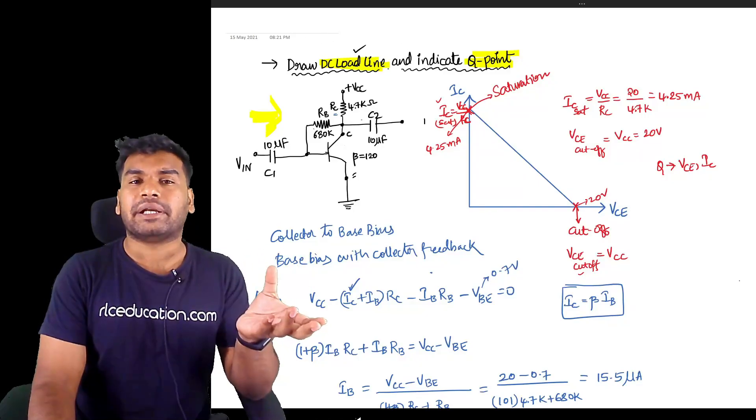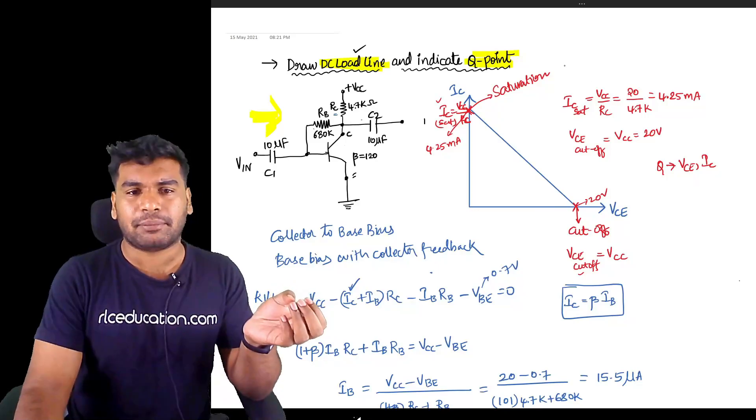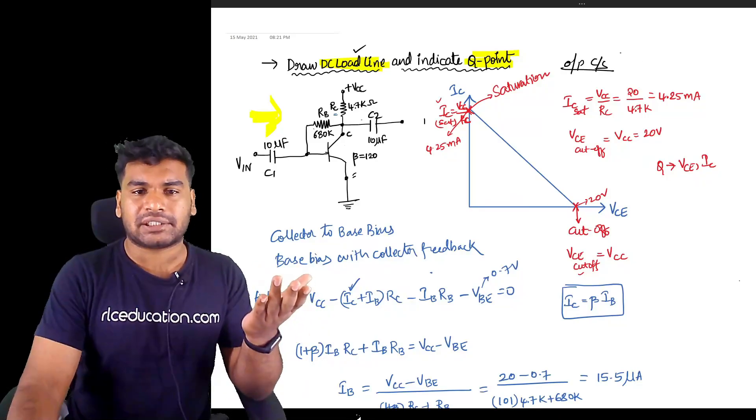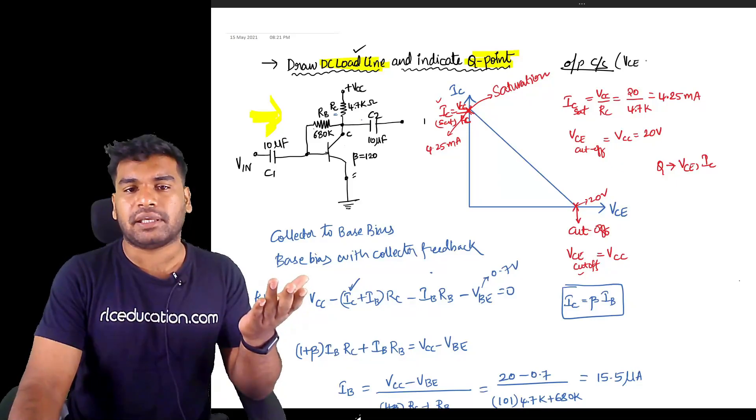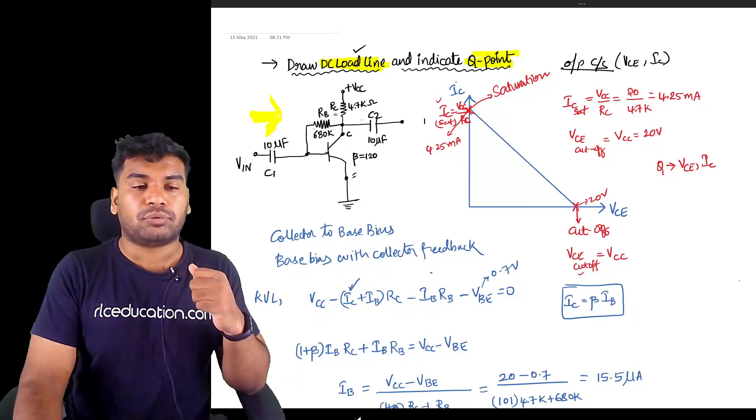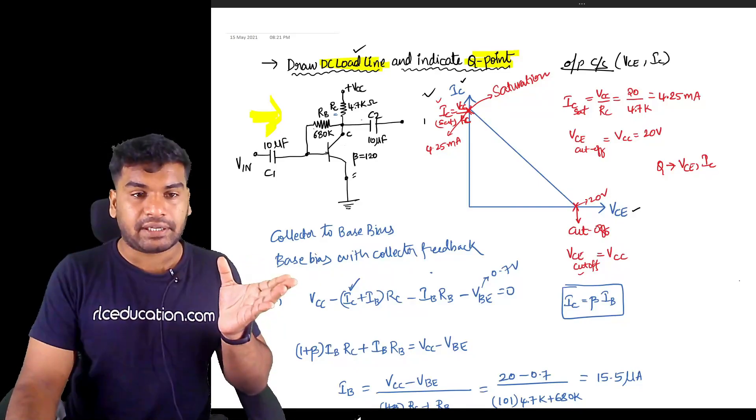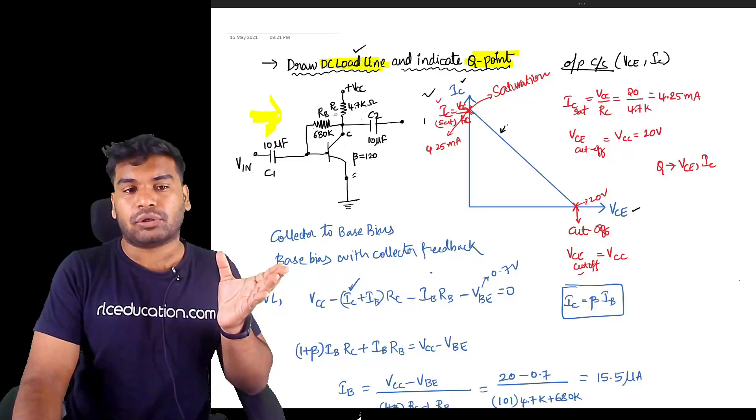First things first, let us make the DC load line. You know how to make a DC load line. DC load line is basically made on output characteristics. Output characteristic is essentially drawn between VCE and IC. Here is the output characteristic - on the y-axis IC is there, on the x-axis VCE is there.